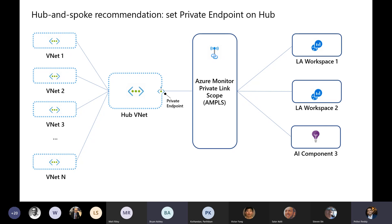The best approach is to send the data to multiple workspaces that are across different regions. So you have the data in both places. If there is a failure in region one, all you have to do is update your DNS.